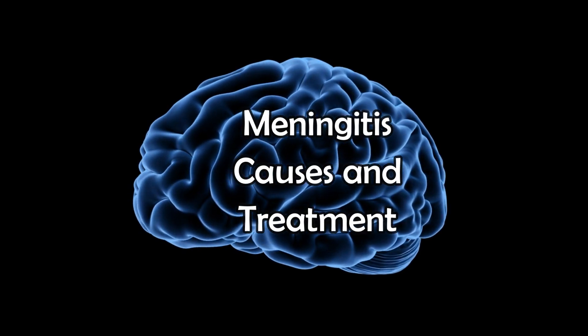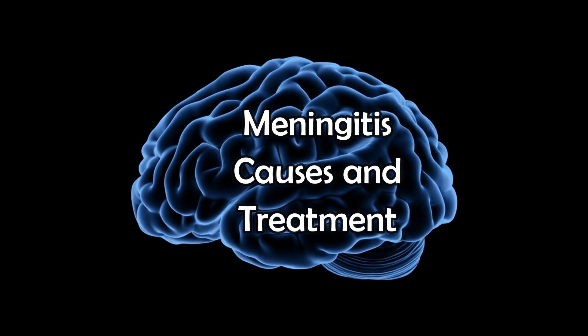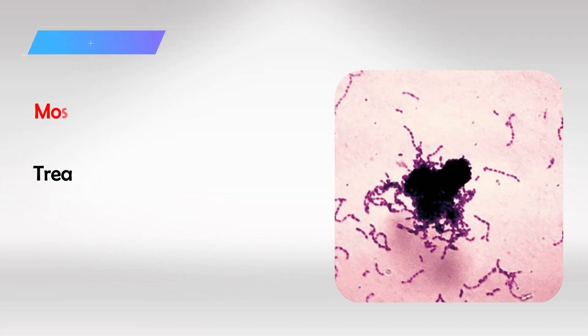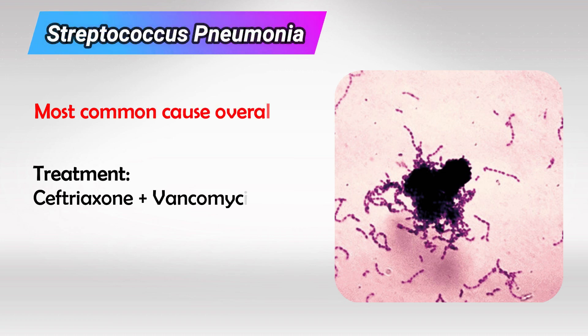Welcome back. In this video, we'll talk about the most common causes of meningitis and the treatments. The most common overall is Streptococcus pneumoniae, which can be treated by ceftriaxone. But the general treatment for meningitis is ceftriaxone plus vancomycin, because there's always a small chance of MRSA meningitis, and if treatment isn't started early it can lead to very high morbidity. So generally, if somebody has meningitis, we give them ceftriaxone plus vancomycin, then wait for culture results to come back to adjust their treatment.